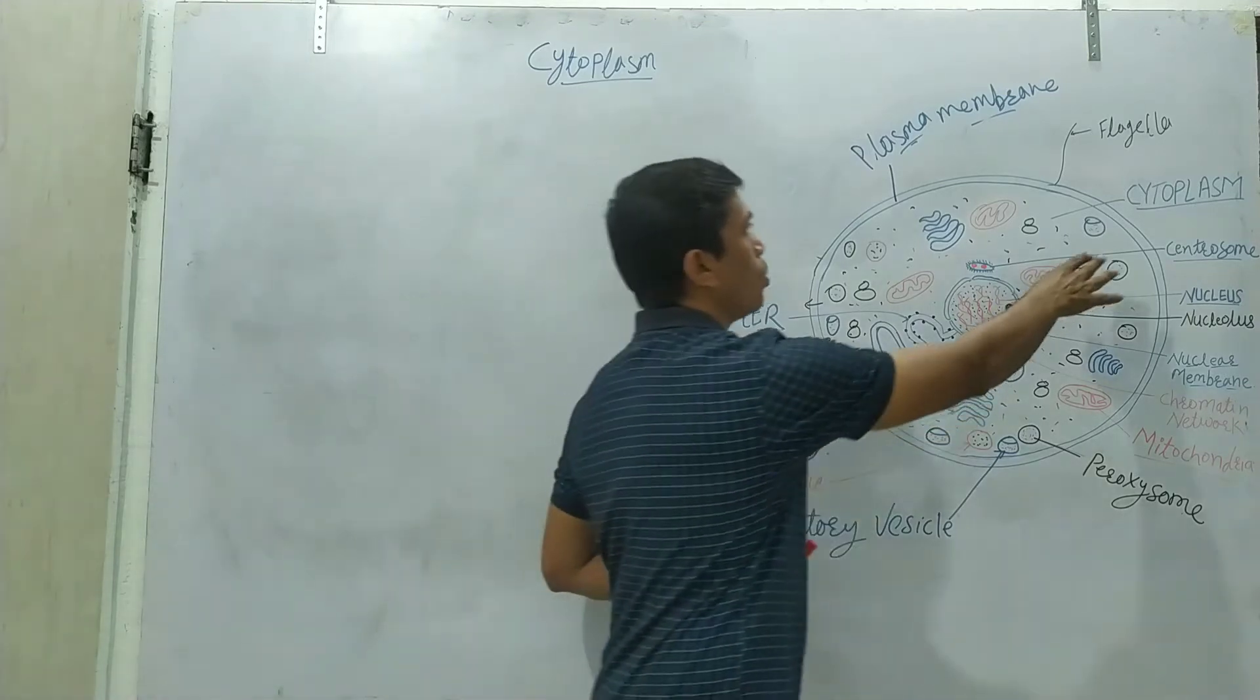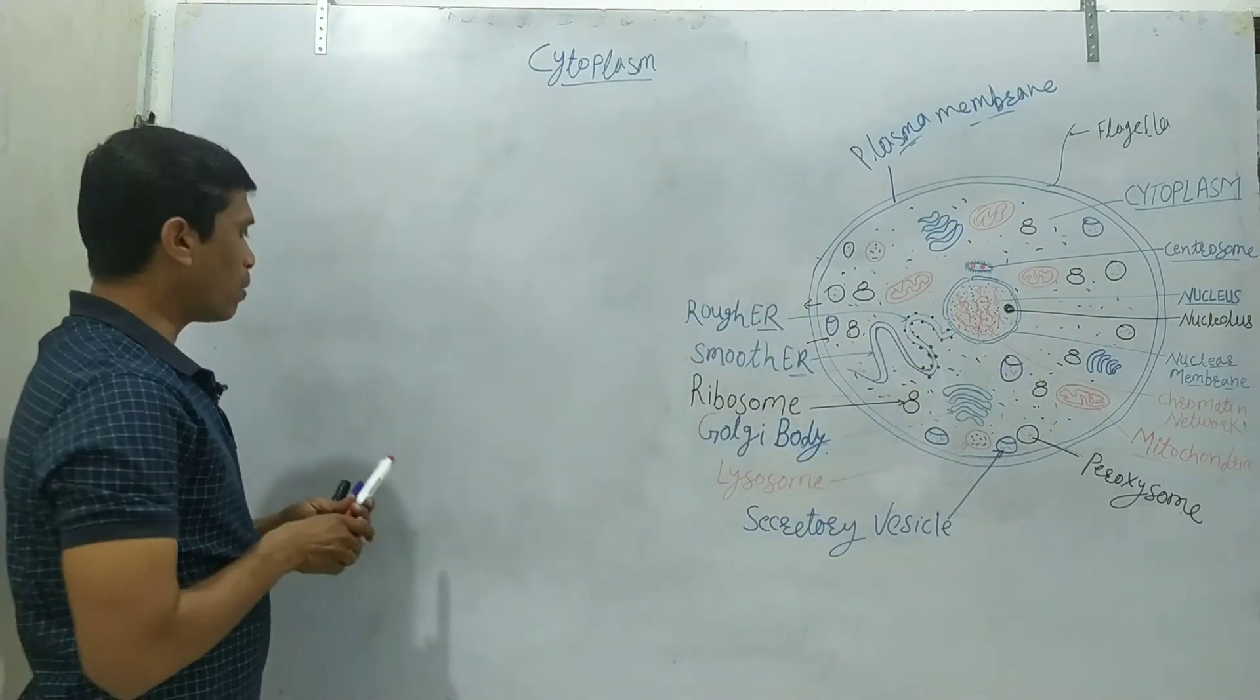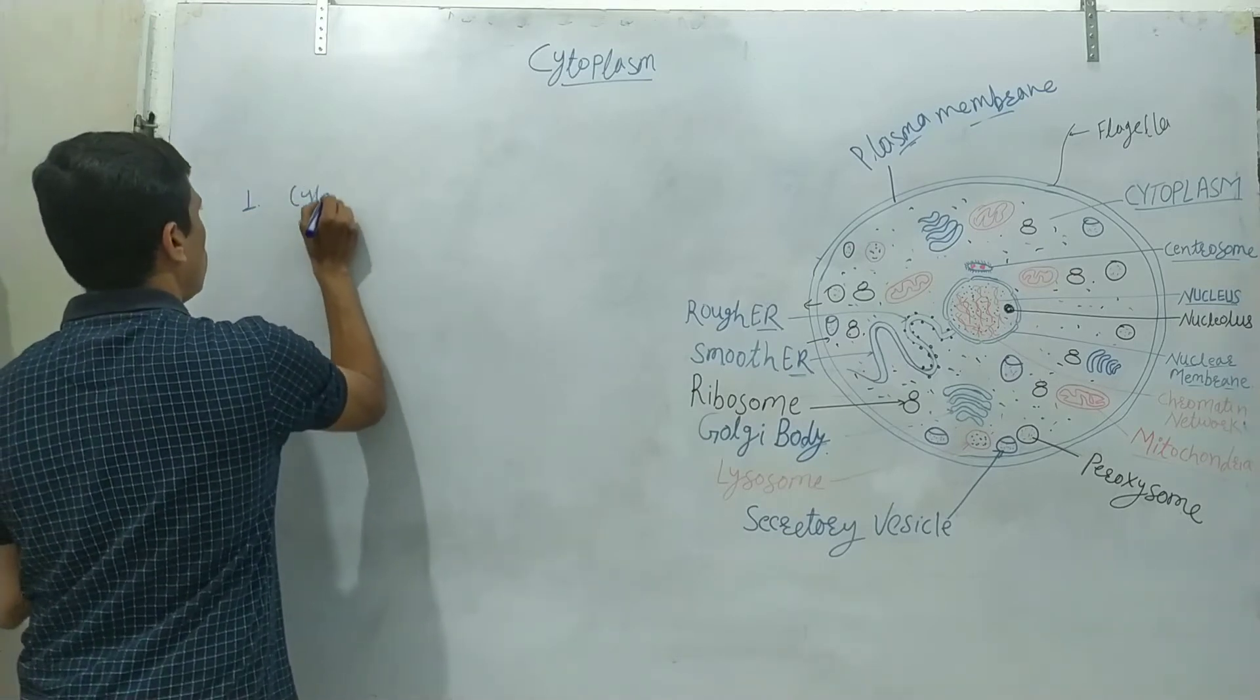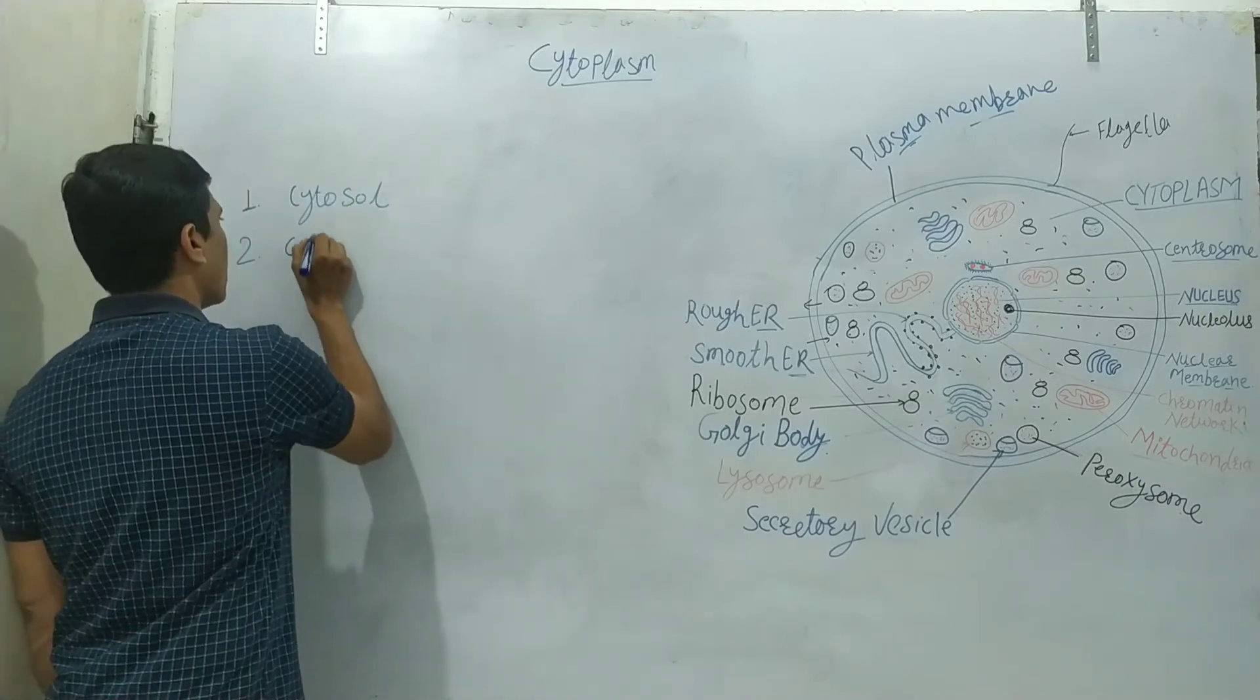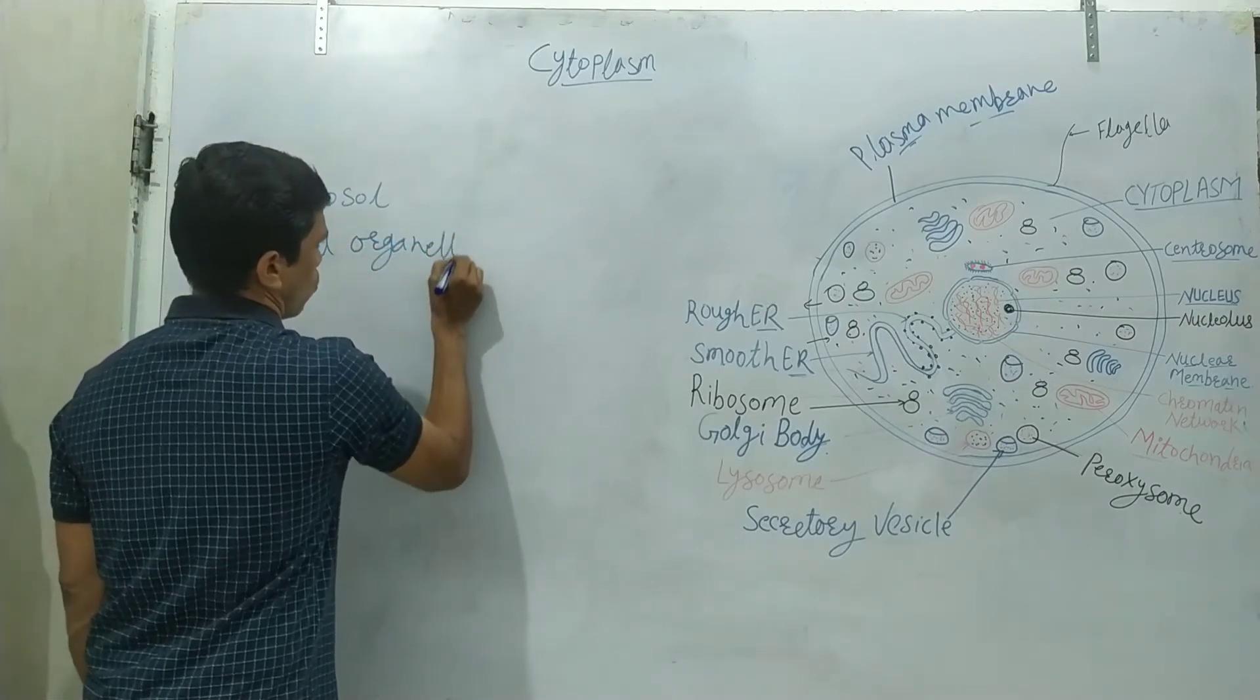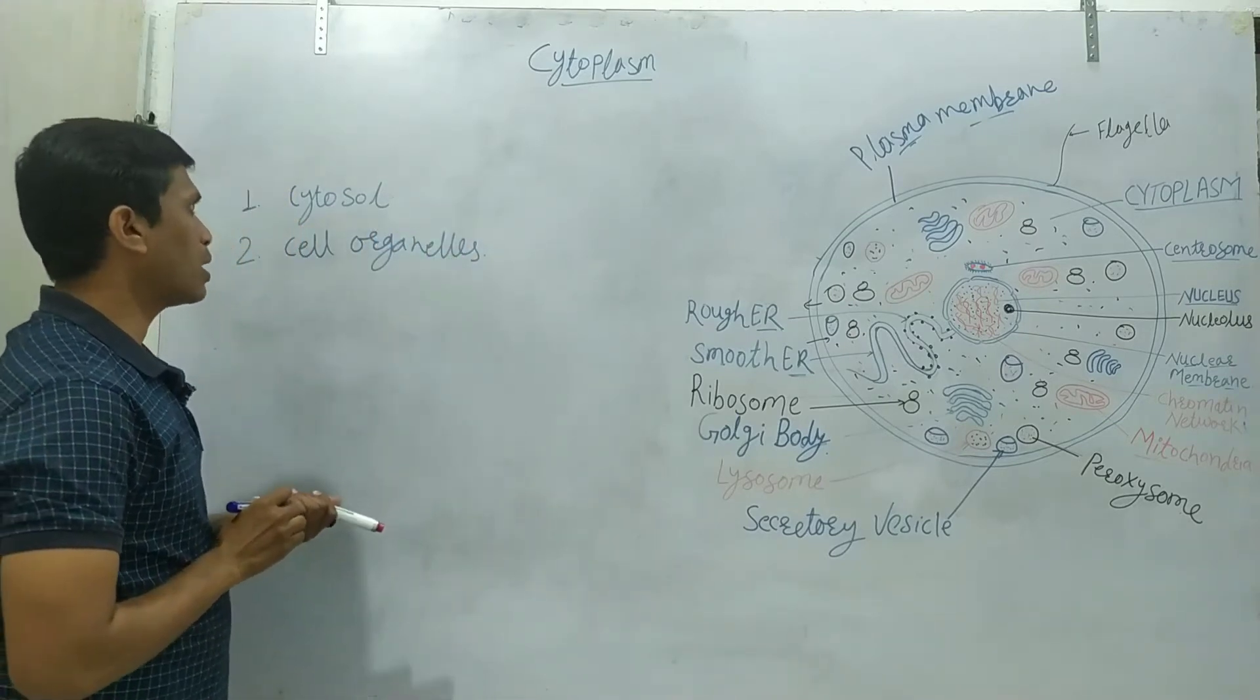Today, we are learning the cytoplasm. There are two basic components of the cytoplasm: first one is cytosol and the next component of cytoplasm is the cell organelles. Cytoplasm has the basic two components of cytosol and cell organelles.